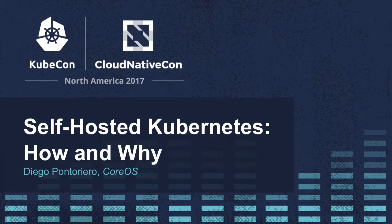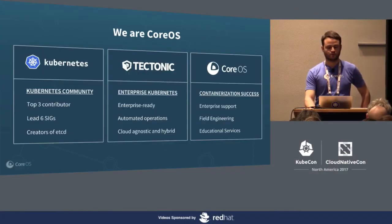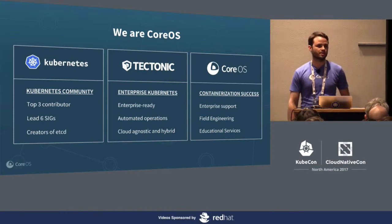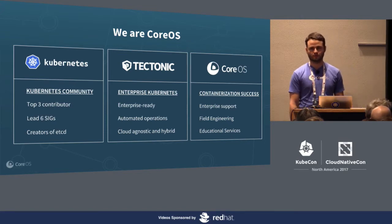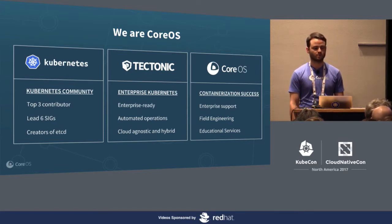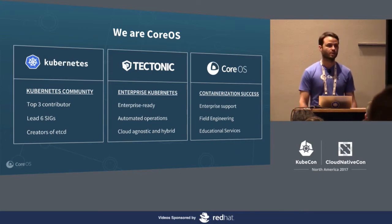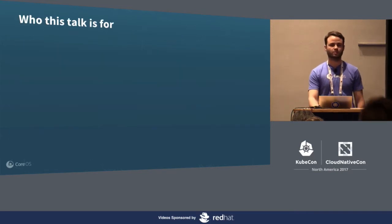OK, we've got a lot to cover, so we're going to get started. My name is Diego. I work at CoreOS, and I'm here to talk to you about self-hosted Kubernetes. CoreOS uses self-hosted Kubernetes in our enterprise Kubernetes distribution, which is called Tectonic. We've been doing this for quite a while now in production with lots of customers, and we think it's the best way to run Kubernetes. This talk, I'm just going to try to prove that to all of you.